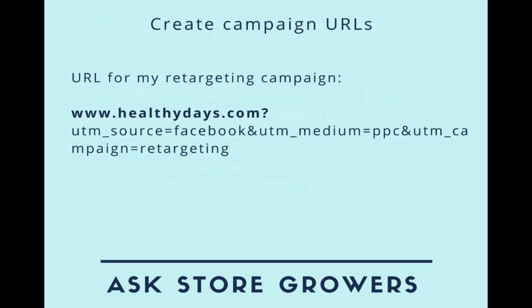So how does this look? If I create a campaign URL for my retargeting campaign it would look like this: www.healthydays.com followed by a question mark, then UTM_source=facebook, an ampersand, and so on.